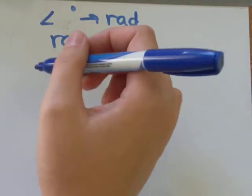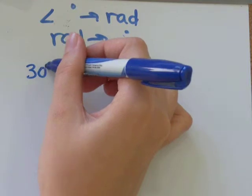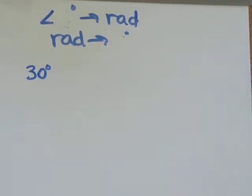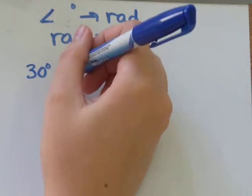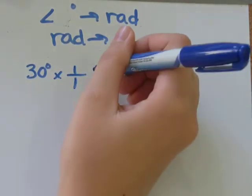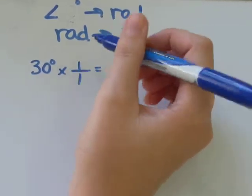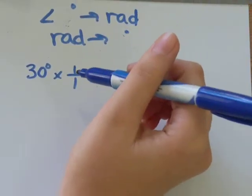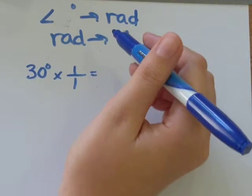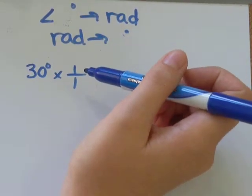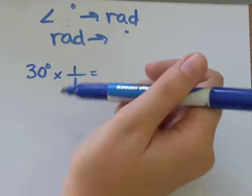So if we have, let's say, 30 degrees, and we want to convert that into radians, well, if we multiplied 30 by a fraction that was equivalent to 1 over 1, that would be equivalent to multiplying by 1, which wouldn't change the integrity of our question. So we need to come up with a fraction that's equivalent to 1 over 1 that has degrees and radians in it.